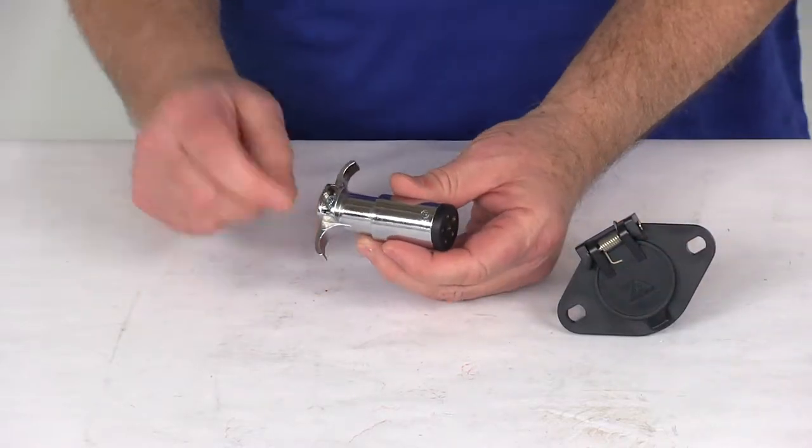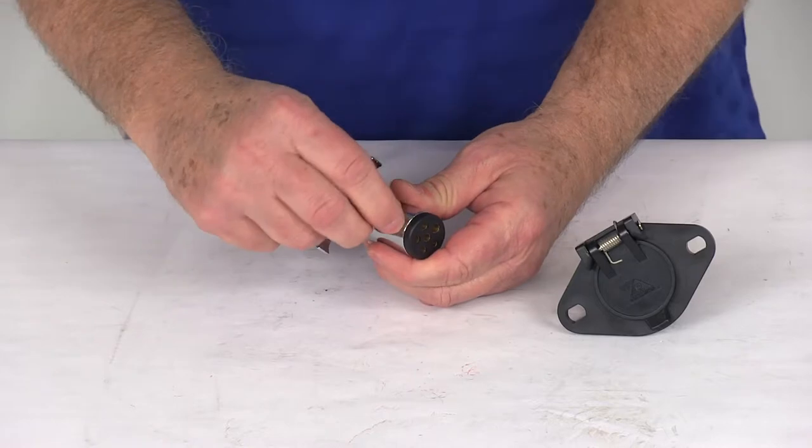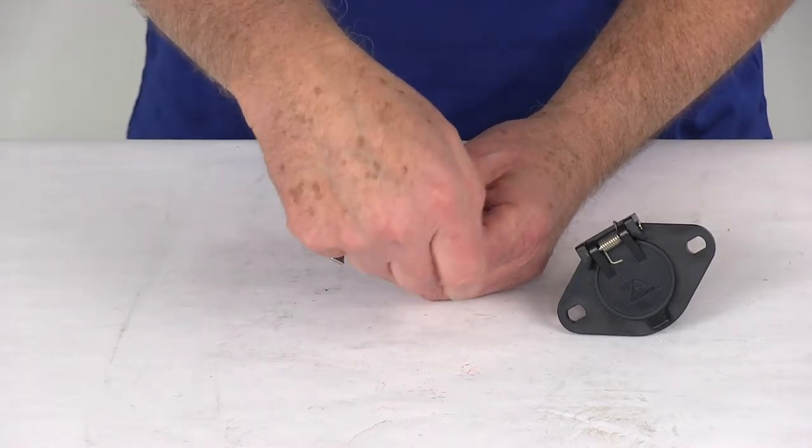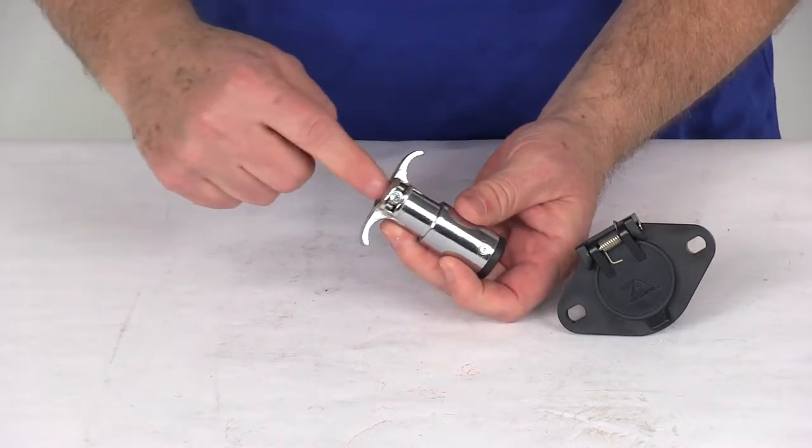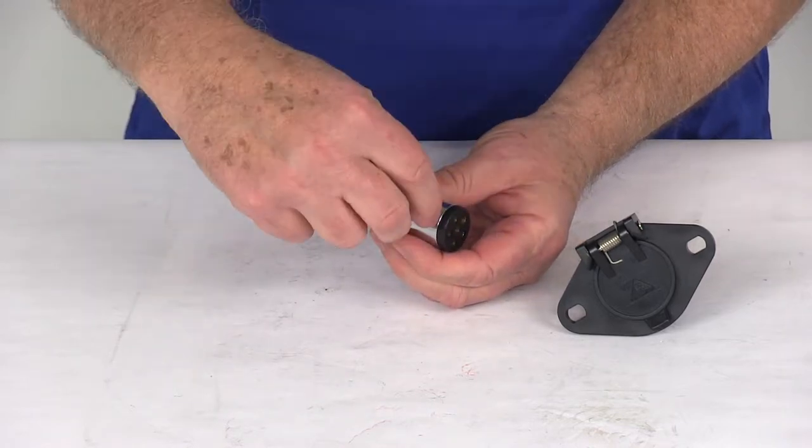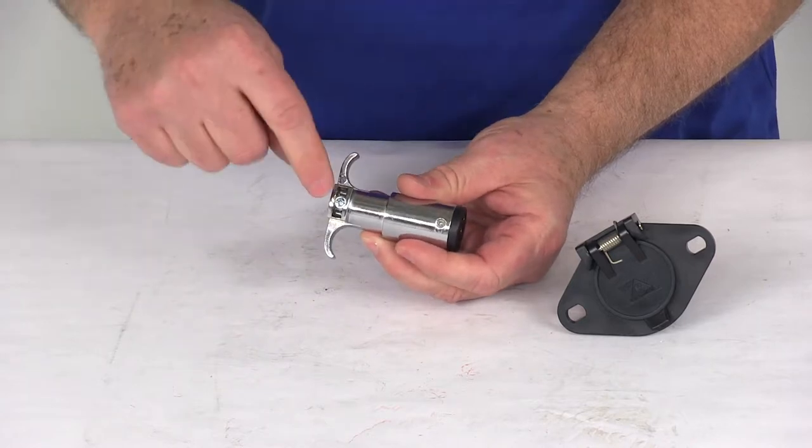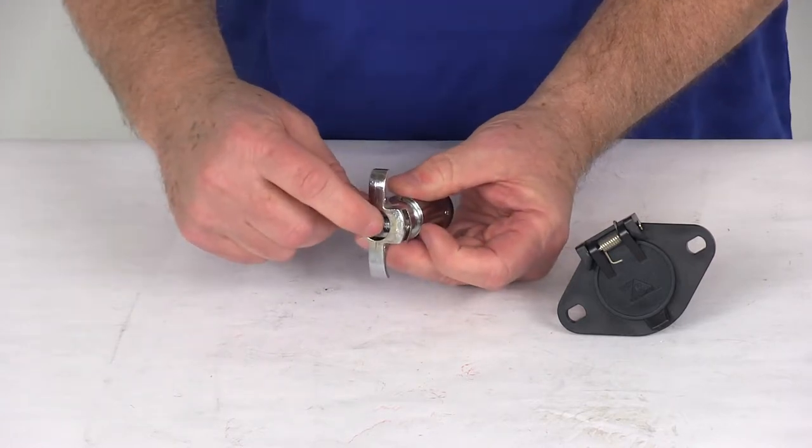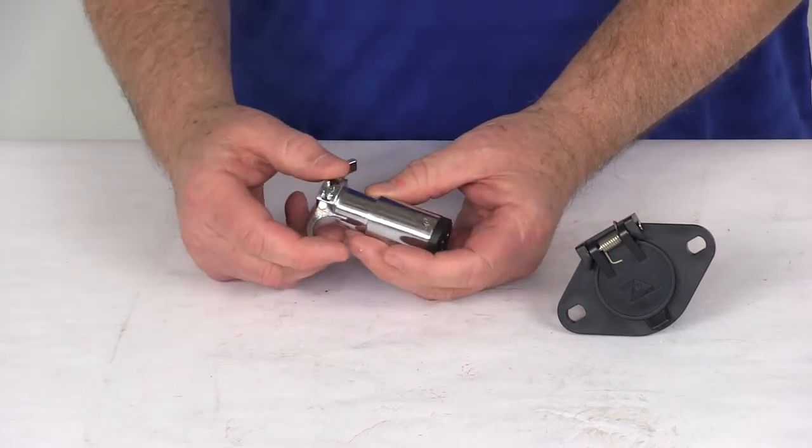And then on your other connector, what you'll want to do is loosen this screw right here, this little Phillips head screw, and this will pop out with your connection points. Just loosen this screw, run your wire through here, make your connection points, push the connector back in, put the screw in to attach it down, and then tighten this screw and it'll hold the wire cord in place so it doesn't pull on there.